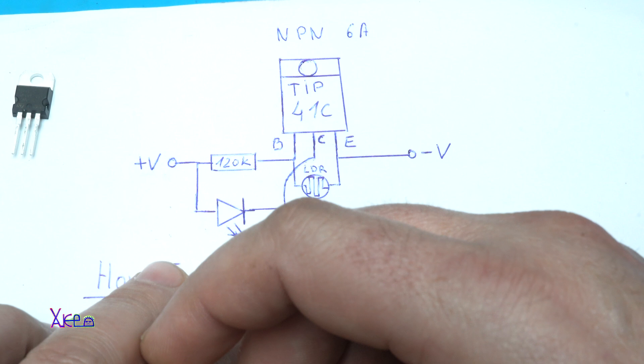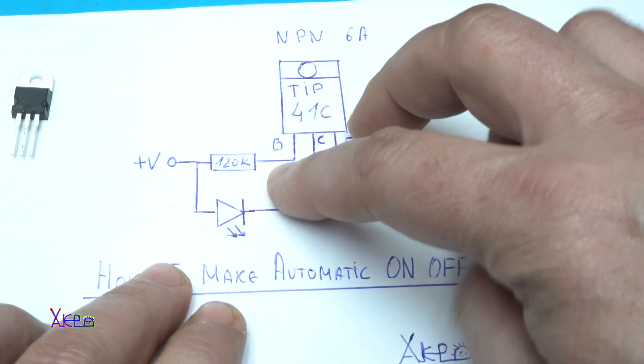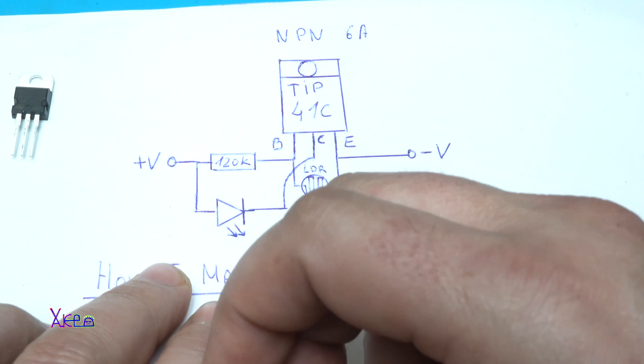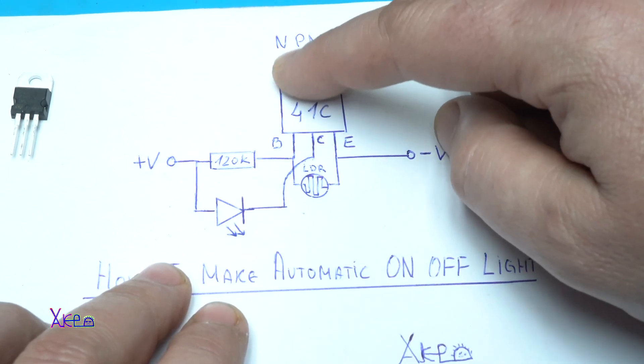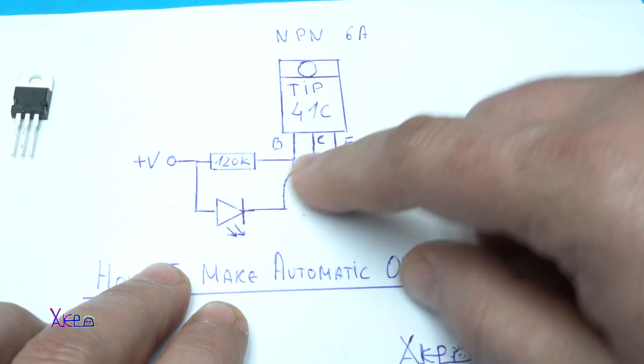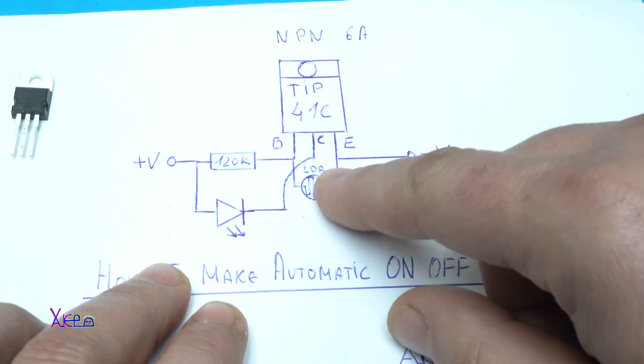I'm going to use a 12 volt array of LEDs. This circuit works from 6 volts maximum to 24 volts. The transistor pinout is base, collector, and emitter.